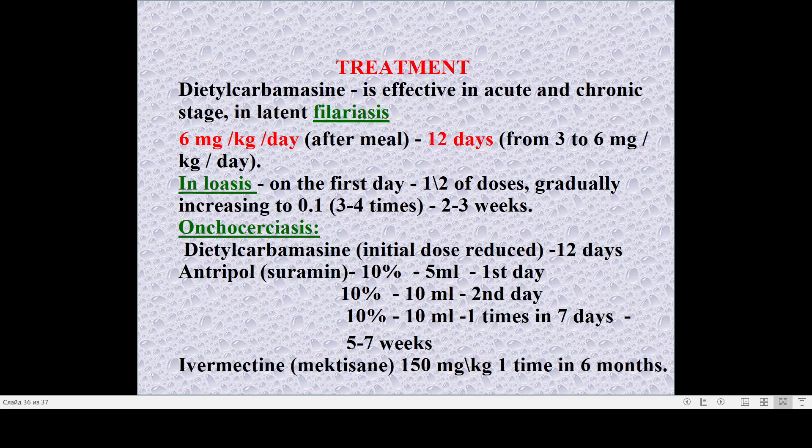Ivermectin scheme is simpler: 150 mcg/kg one time every six months. It is not as complete as diethylcarbamazine or suramin, but effective for treatment of different kinds of microfilariasis. Parallelly, symptomatic therapy is necessary. In the obstructive stage, surgical care is required. Therapy of complications in each case includes antihistamine remedies and non-steroidal anti-inflammatory remedies. In periods of disease attack, detoxification will be necessary. The main treatment for this kind of disease is etiotropic therapy with eradication of parasites.